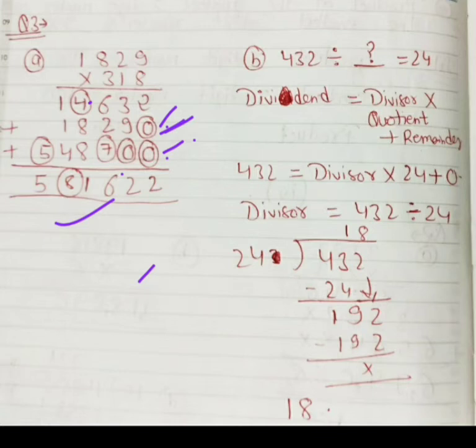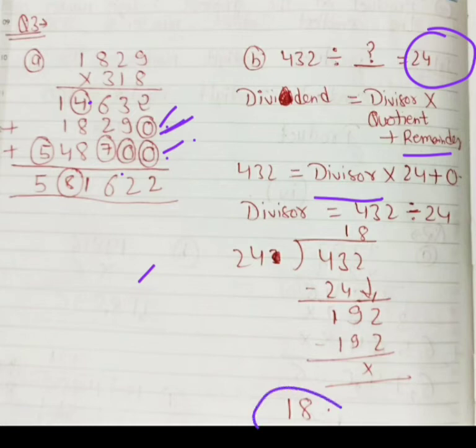432 divided by dash equal to 24. Dividend is equal to divisor multiply quotient plus remainder. So dividend is 432, divisor hume malum nahi hai, 24 se multiply kareo, remainder 0. So divisor 432 ko hum just divide karing 24 se, to answer aagya 18. So 18 will be the divisor.